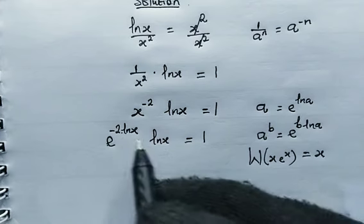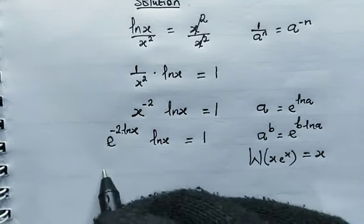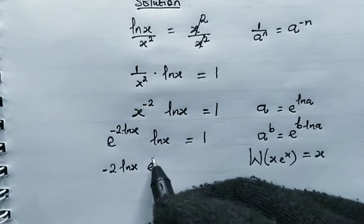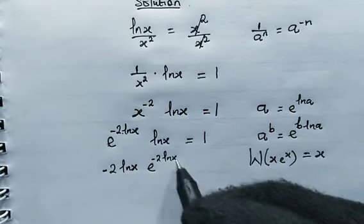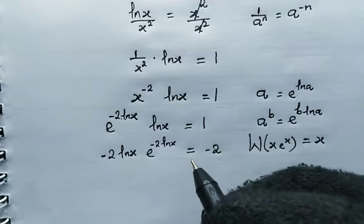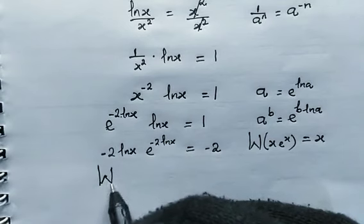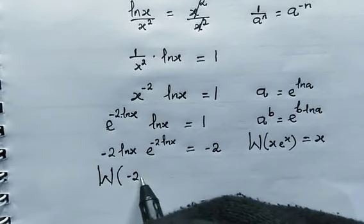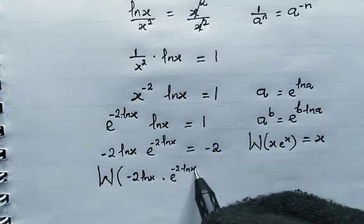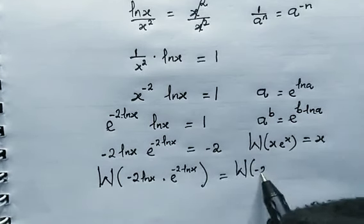So let's make them equal by multiplying both sides by negative 2. Multiplying both sides by negative 2, we get negative 2 multiplied by the natural log of x, times e raised to the power of negative 2 times the natural log of x. This equals negative 2. Now let's introduce the Lambert W function on both sides, giving us the Lambert W function of negative 2.